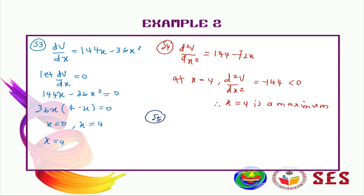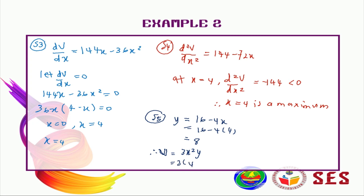Lastly, we need to find y. Y is equal to 24 minus 4x, so 24 minus 4 times 4 equals 8. We now have x equals 4 and y equals 8. The maximum volume is V equals 3x squared y, so 3 times 4 squared times 8 equals 384 cm³.